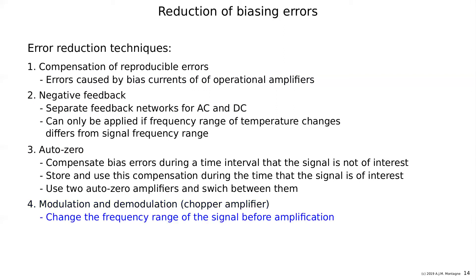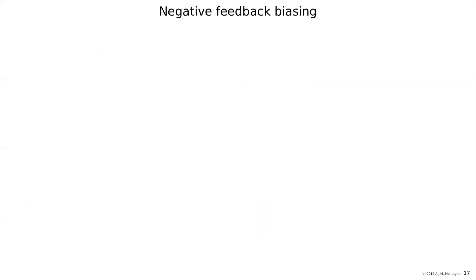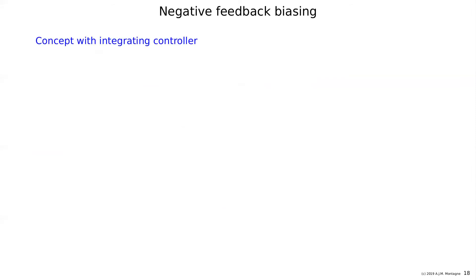That covers the available techniques, but we will only discuss negative feedback biasing here. In the figure, you see our amplifier with negative feedback resistors R2 and R3, source R1, AC coupling with C1, and C2 also for AC coupling. We want to provide the bias current and have the output at some reference voltage, so we measure the output voltage.